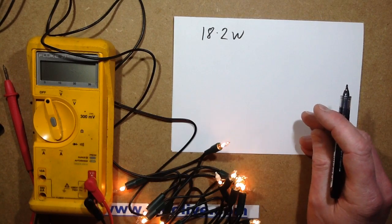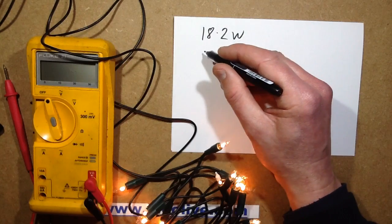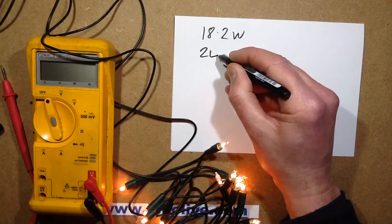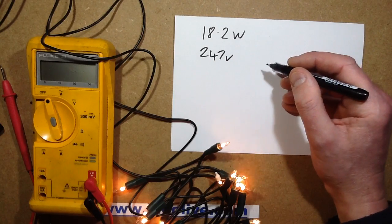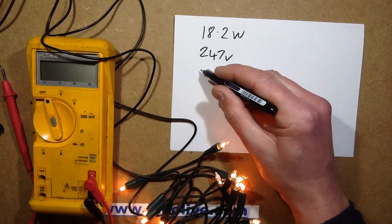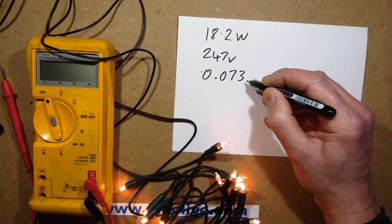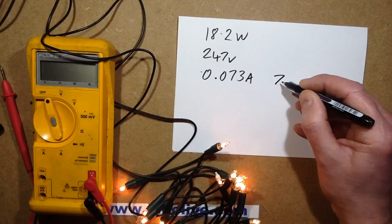And they're currently drawing, actually it's 246.8 volts. That's pretty good. So it's 247 volts. And the current being drawn is 0.073 amps, so 73 milliamps.